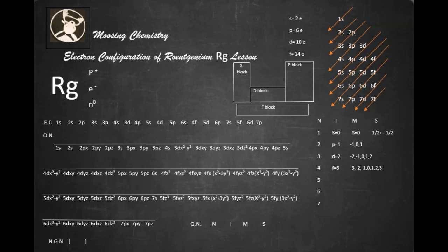Roentgenium is element number 111. And its atomic mass number is 280 for its most stable isotope configuration. That means it has 111 protons. To be electrically neutral, you have to have 111 electrons. And to have our number of neutrons, we have to subtract 280 minus 111, which would give us 169 neutrons.